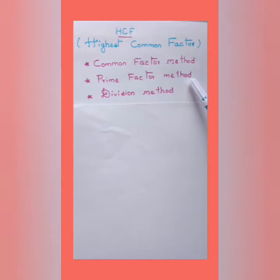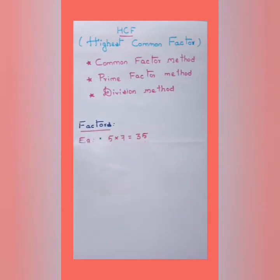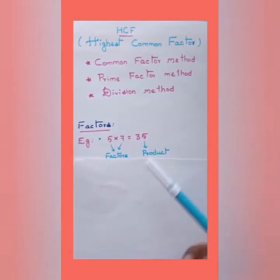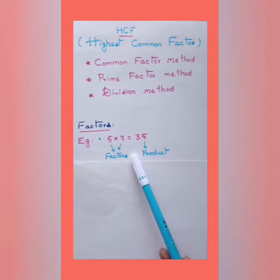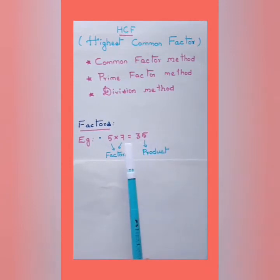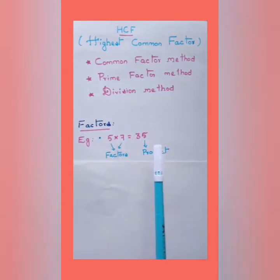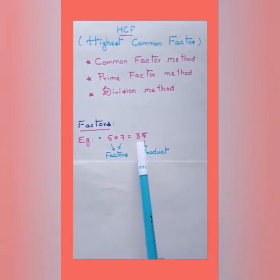Before moving to the numericals, let us recall what factors are. When two or more numbers are multiplied, the result is the product and the numbers multiplied are called factors. For example, 35 can be written as 5 × 7, where five and seven are called factors and 35 is the product.